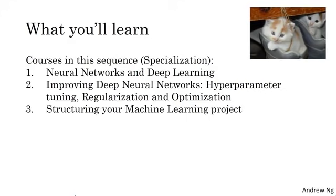In the third course, which is just two weeks, you learn how to structure your machine learning project. It turns out that the strategy for building a machine learning system has changed in the era of deep learning. So for example, the way you split your data into train, development or dev, also called holdout cross validation set, and test sets, has changed in the era of deep learning.